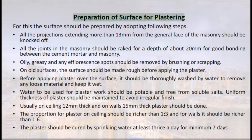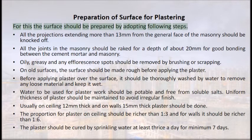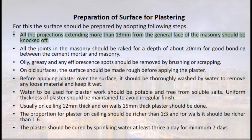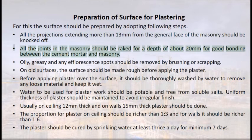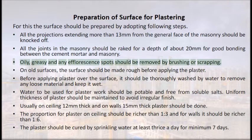Preparation of surface for plastering: the surface should be prepared by adopting the following steps. All projections extending more than 13 mm from the general face of the masonry should be knocked off. All joints in the masonry should be raked to a depth of about 20 mm for good bonding between the cement mortar and masonry. Oily, greasy, and any efflorescent spots should be removed by brushing or scraping.